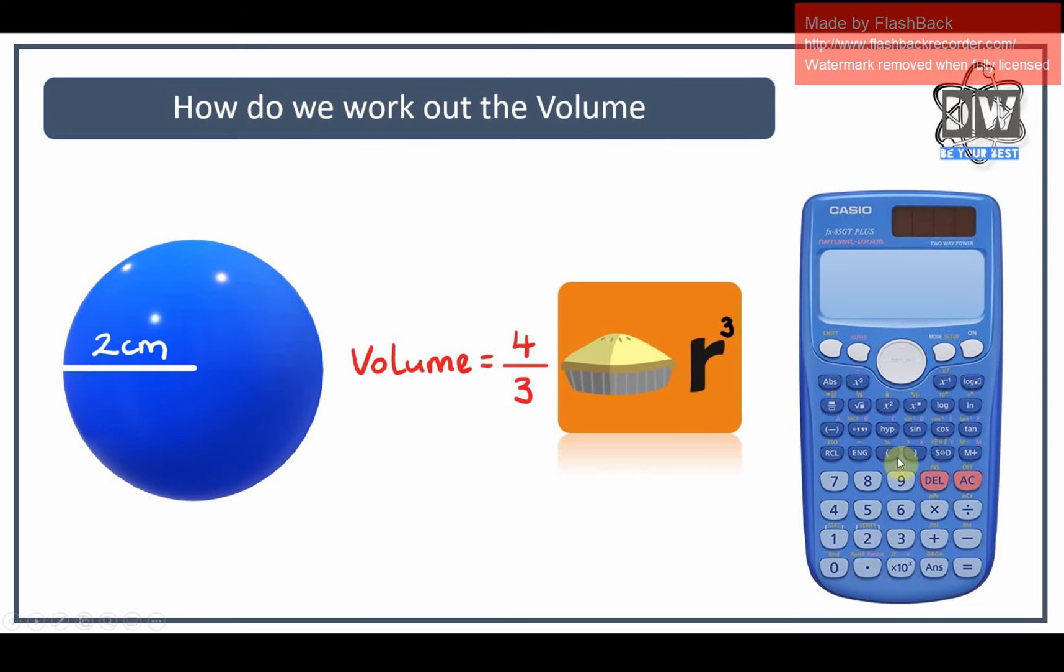The buttons that we're going to need to use will be this button here, the fraction button. We're going to need to use the pi button which is shift and then down this one, and we're going to need to use our cubed button which is the one just here. We can actually use this one, but because it's already one on our calculator, some of your calculators might not have this cube button so you'll need to use this button here that you'll find on yours possibly.